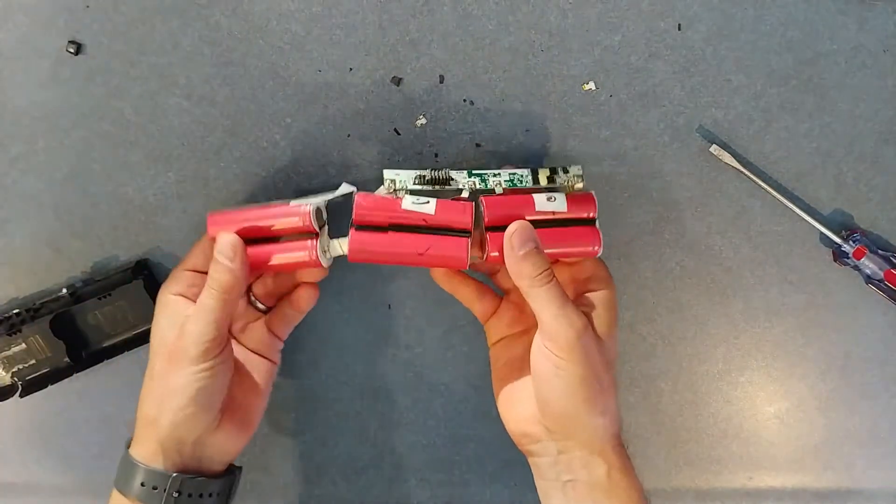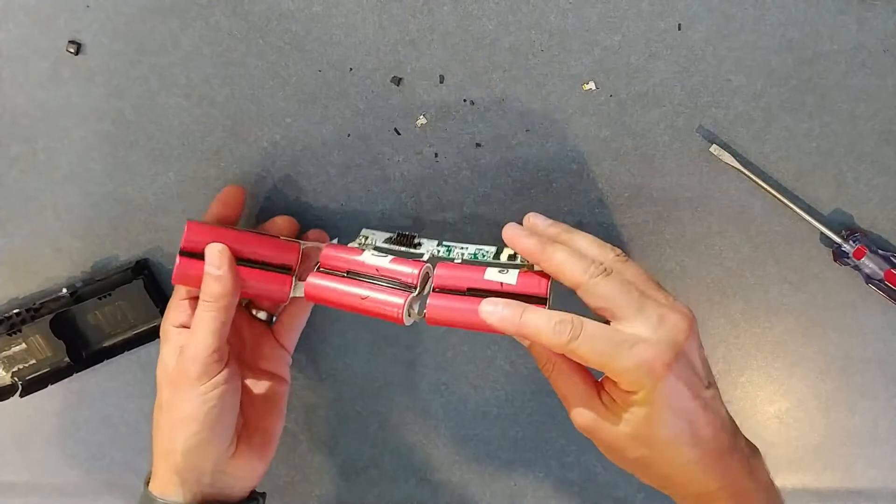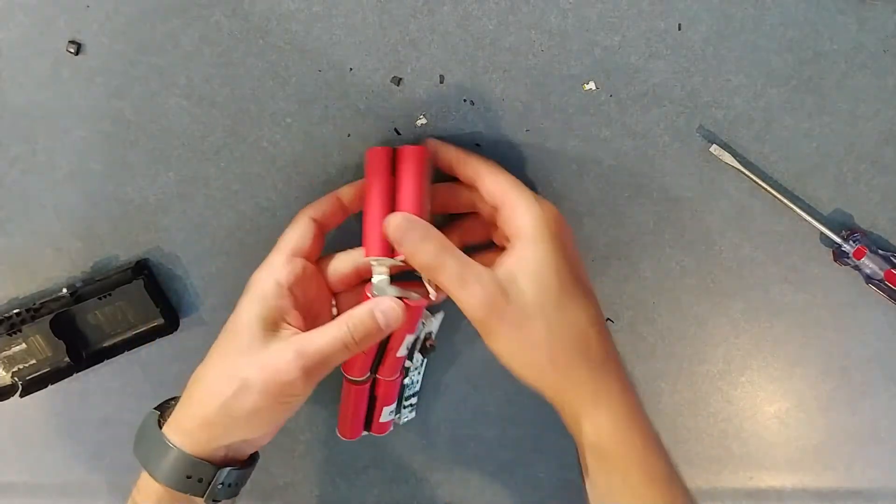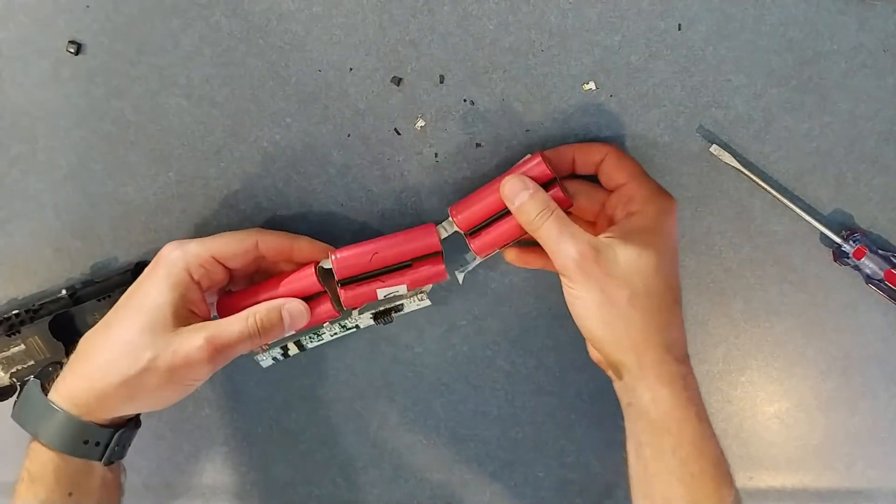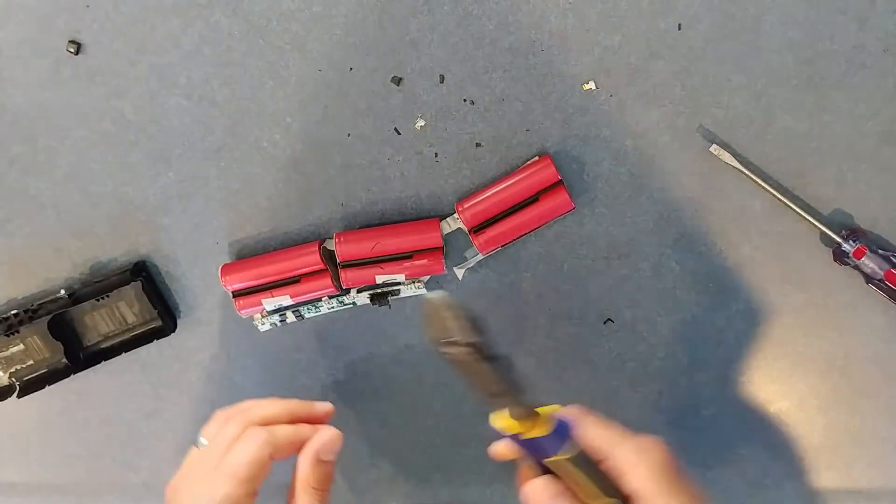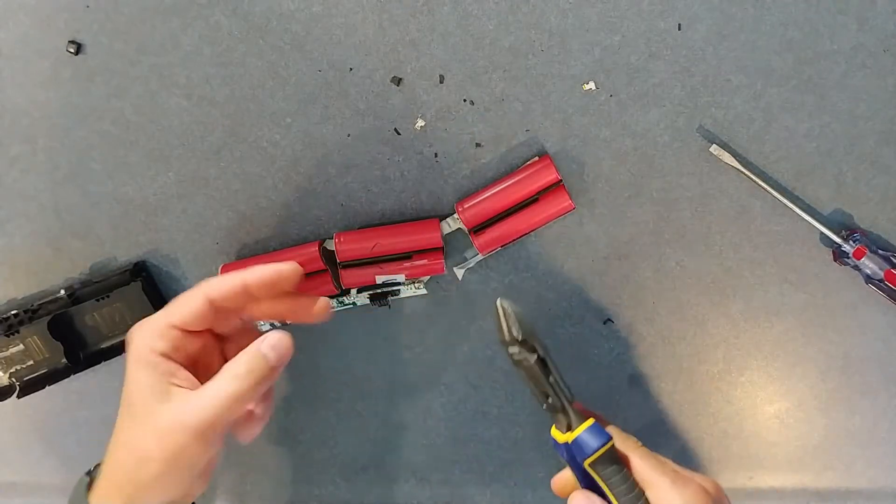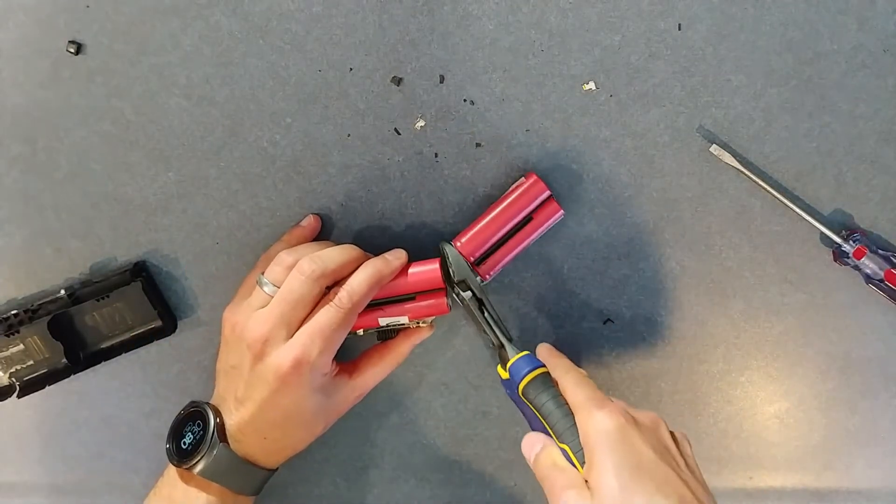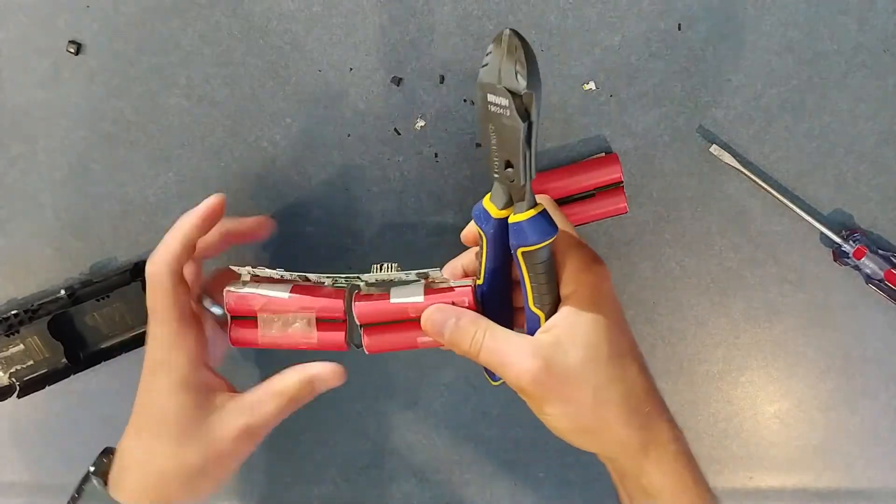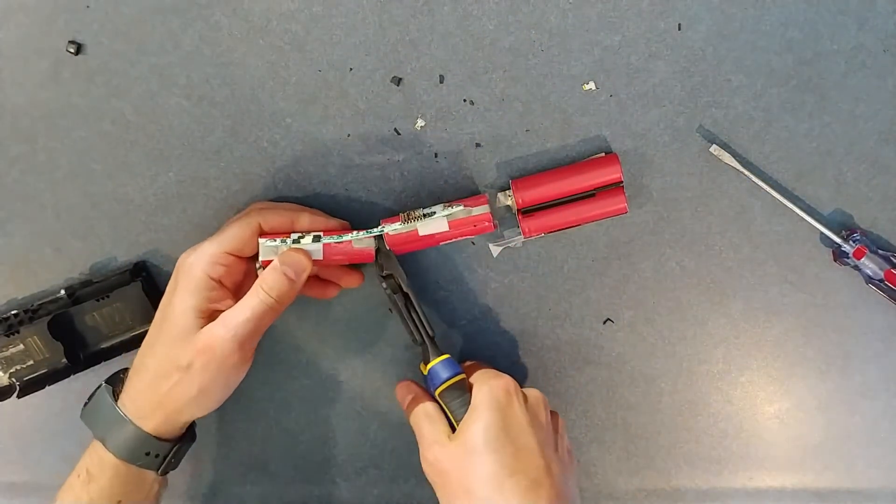So now we have our six individual cells. We can see they're connected to the circuit board and they're connected to one another. When you're cutting wires or cutting strips, you want to make sure you're only cutting one wire or one strip at a time, in case you accidentally cut through two wires where there'd be a short. And so I'm just going to separate these batteries one connection at a time with a good wire cutter.